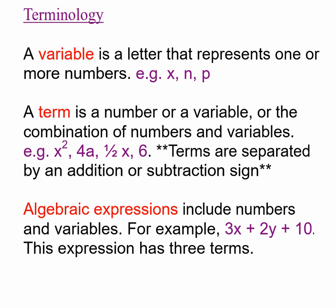A reminder: a variable is just a letter that represents one or more numbers, and it can change depending on an expression. For example, in 2x + 5, if x was 1 that would equal 7, but if x was 3 that would equal 11. So the variable can change depending on the situation.